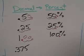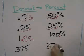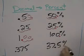So 0.375, according to the pattern, would be 37.5%.